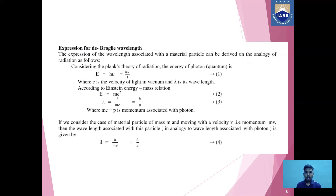Now let us come to the main topic of this session, that is, the expression for De Broglie wavelength. The expression of wavelength associated with a material particle can be derived on the analogy of radiation as follows. Considering Planck's theory of radiation, the energy of a photon can be given as E = hν, where ν = c/λ. So energy of photon is E = hc/λ, where c is the velocity of light in vacuum and λ is its wavelength. According to Einstein's mass-energy relation, E = mc². Equalizing both, λ = h/mc = h/p, where mc = p is the momentum associated with the photon.